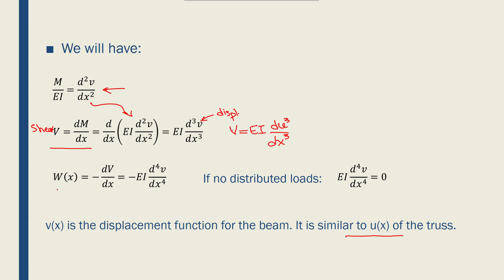From before we also know that w(x), the distributed forces, is equal to minus dV/dx. So if we bring that equation in here we will know that w(x) becomes minus EI times d⁴v over dx to the power of four. And if there is no distributed loads applied to a beam, then that equation becomes simply zero.